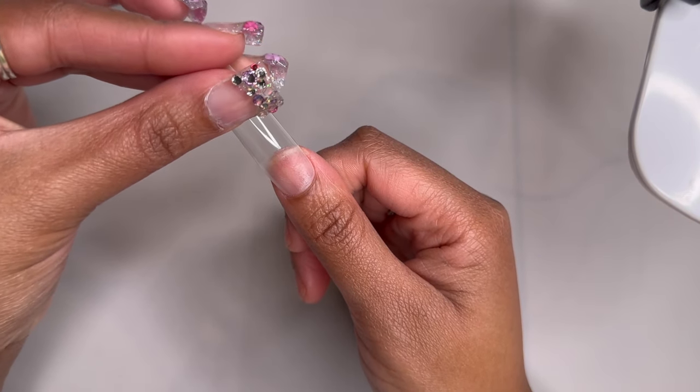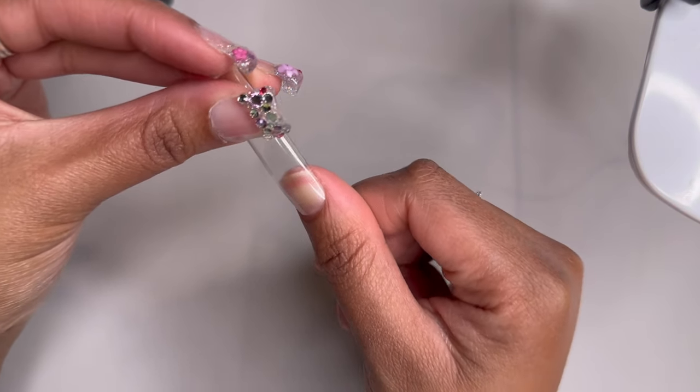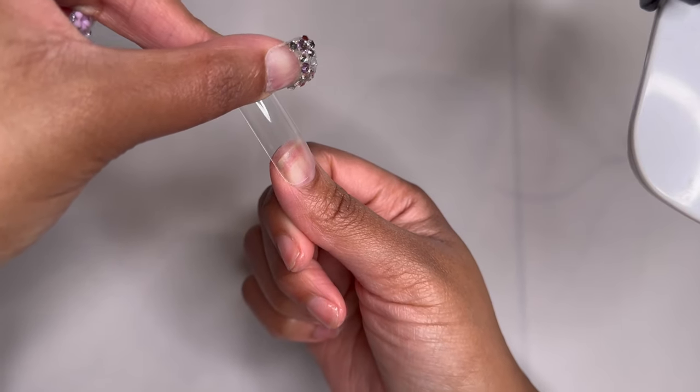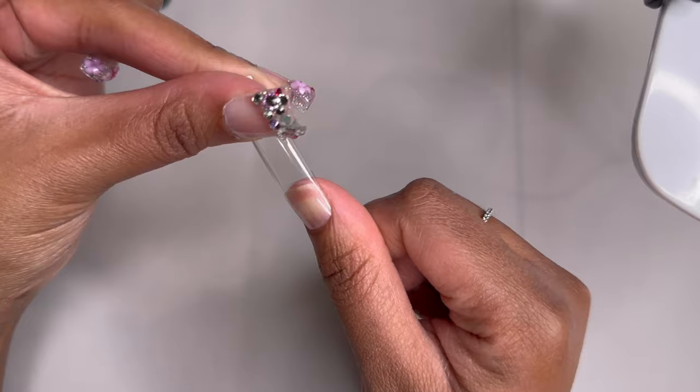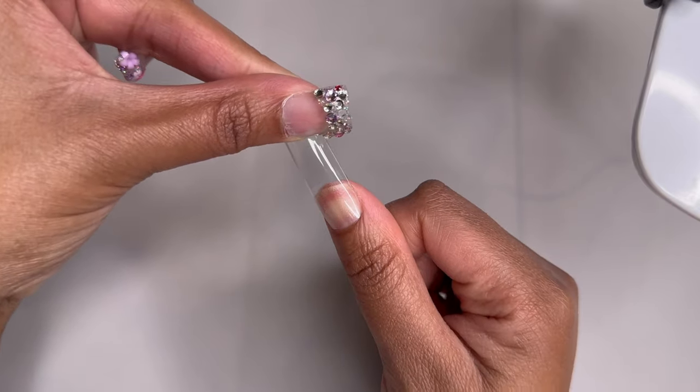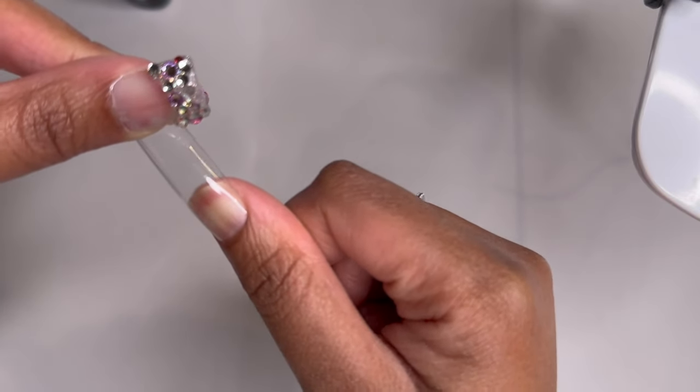You want to be sure to find a full cover tip that fits from side wall to side wall that is not having any gaps or that does not allow any product to sit on your skin because we don't want to have lifting and we want everything to look seamless.